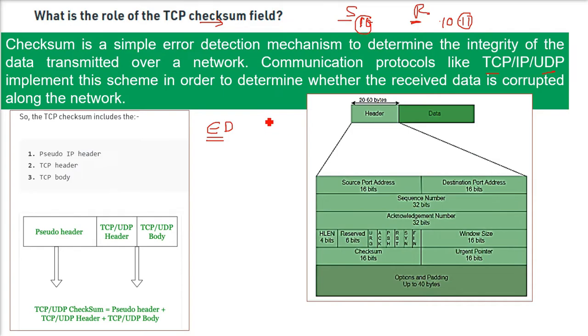Because of noise burst and various problems, the data may get corrupted along the network. In both TCP and UDP, we have a pseudo IP header, a TCP header, and TCP body.